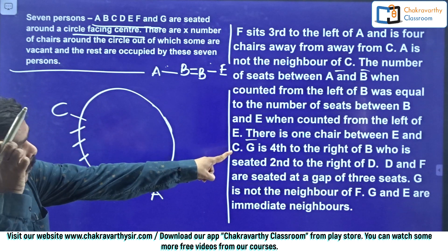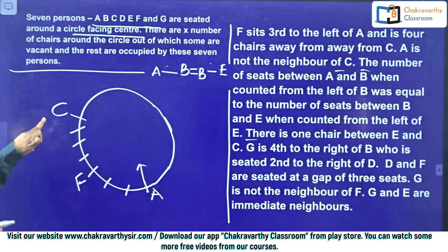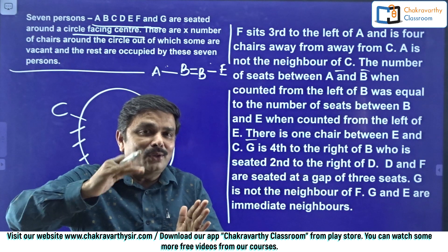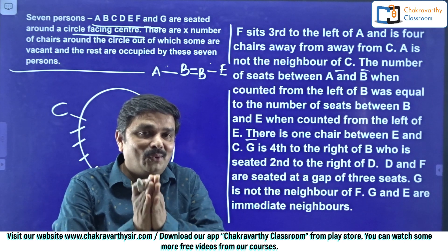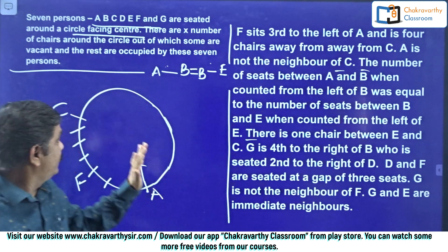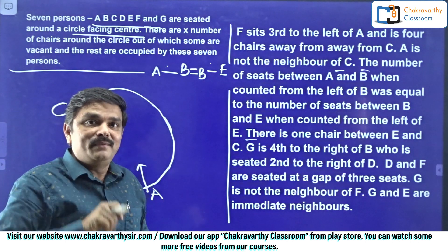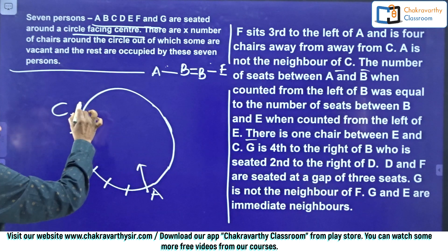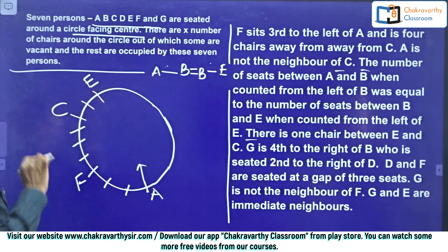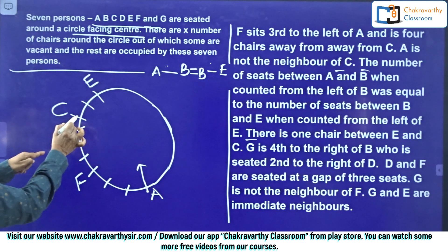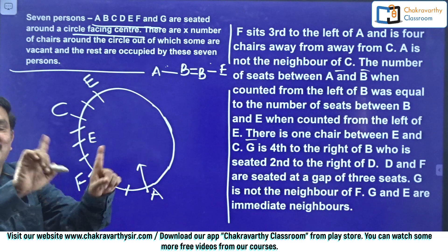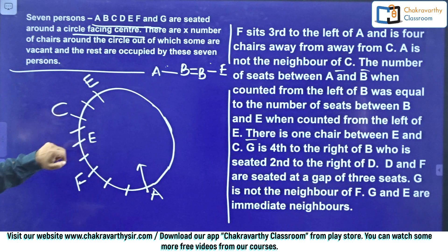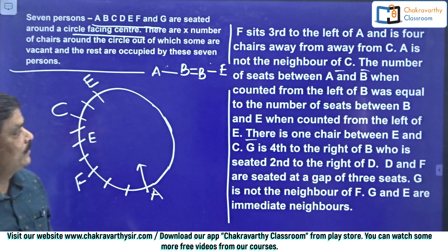Next clue: there is one chair between E and C. C's place is already confirmed. Whether it's on the right or left side of C, they haven't given. So two possibilities exist for E. Instead of taking a separate diagram, I write both possibilities inside and outside — two equal possible places for E. Then the next clue: G is fourth to the right of B, who is seated second to the right of D. This involves G, B, and D, but there's no clue to place it yet — I'll keep this aside for further use.